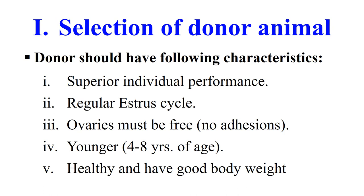The first step is the selection of the donor animal — the animal from which we isolate the embryo for transfer. The donor animal should have the following characteristics: it should be of superior quality with superior individual performance, it should have a regular estrus cycle, the ovaries must be free and not attached to any other cells, and generally we prefer younger animals aged 4 to 8 years that are healthy and have a good body weight.